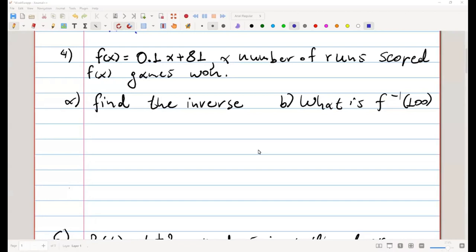Now for exercise four we're given a function, a linear one, where x represents the run scores and f of x the games won. We are asked to find the inverse and then what is the inverse of 100.